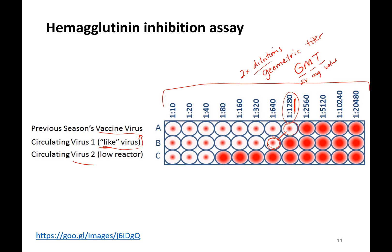As compared to a second virus, the sera from that patient could only inhibit hemagglutination at a 1-to-40 dilution. This means the antibodies are not specific to virus 2, meaning that virus is more dissimilar to the other two. So if you're looking for a universal vaccine, you would want whatever you're using for the vaccine and whatever viruses you're challenging the organism with to have similar geometric mean titers — similar dilution levels where they're inhibiting hemagglutination.